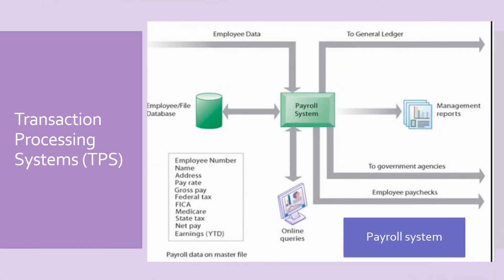In this diagram, you can see an example of a payroll TPS. The green rectangle is the TPS connected with a database. Employee data is entered from the internal source, a screen shows the output given by TPS, and its output will further be utilized by government agencies.